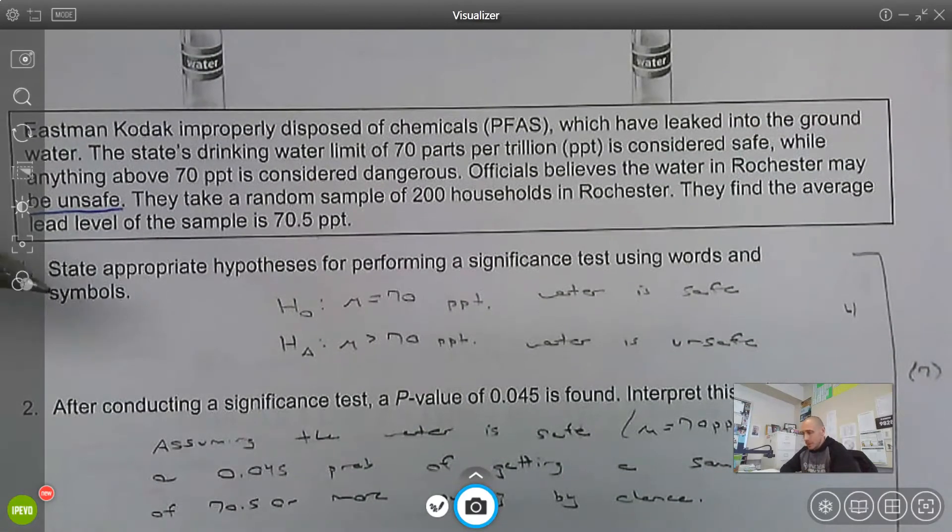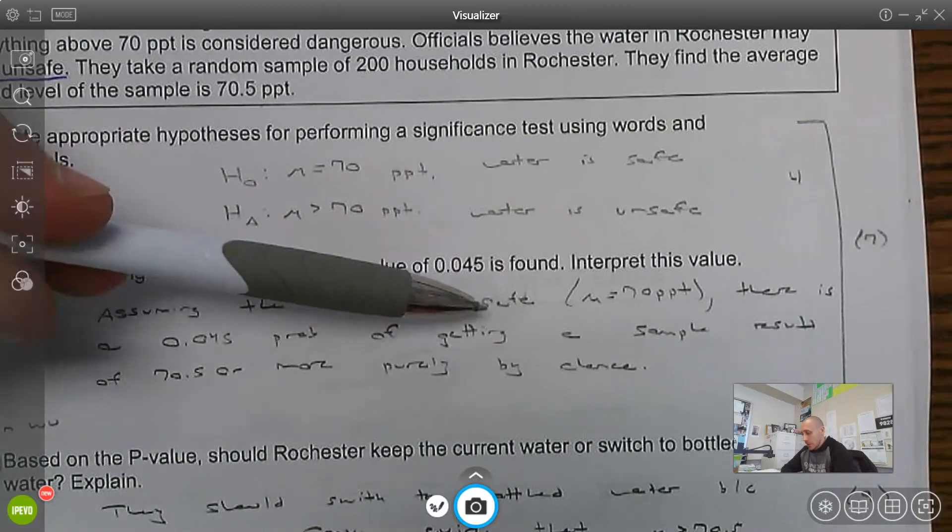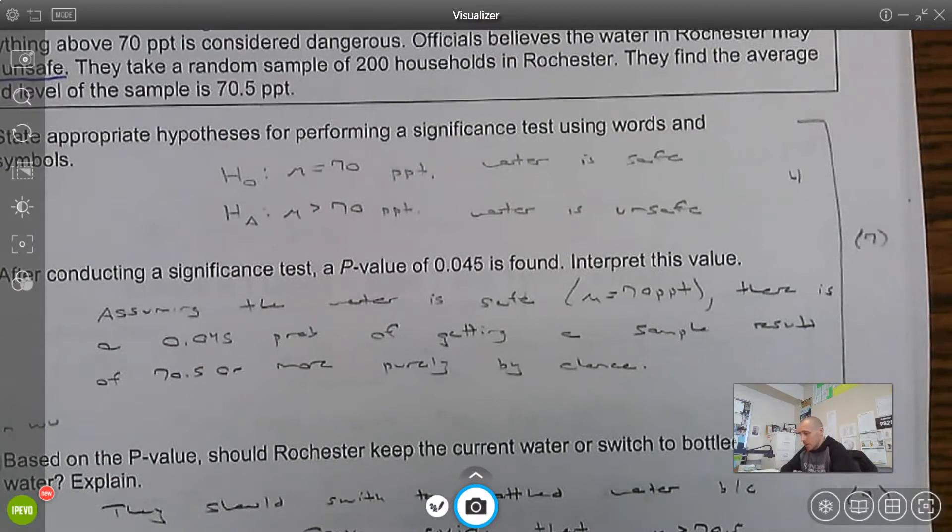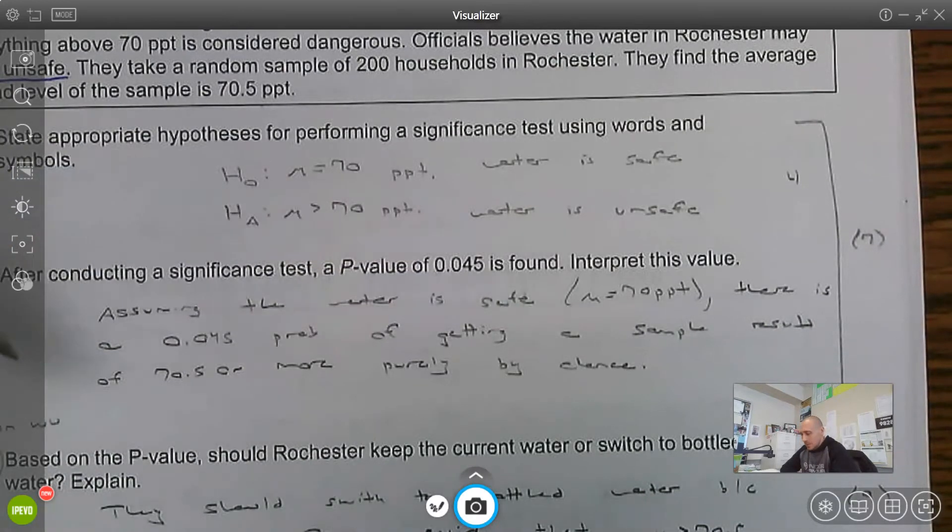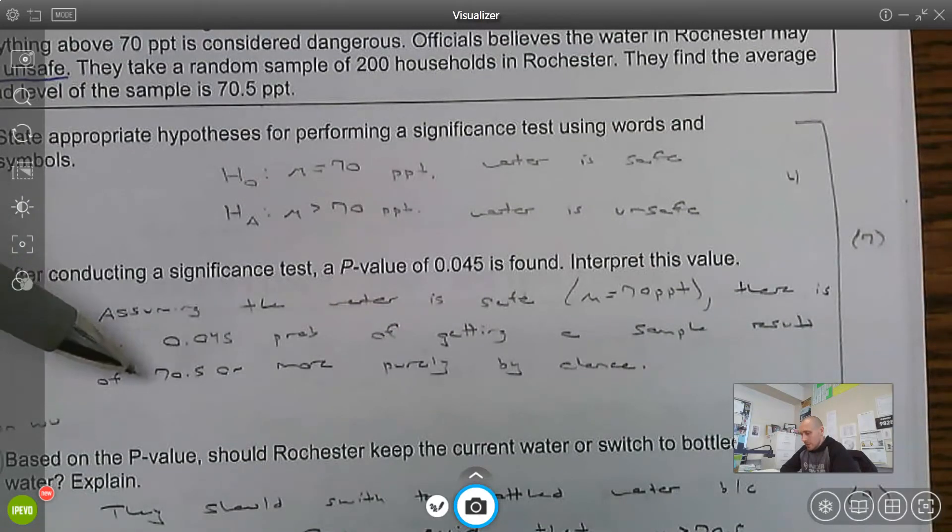Interpreting a p-value, been there, done that. This is the idea of assuming the water is safe, or assuming that mu is equal to 70 parts per trillion. There is a 0.045 probability of getting a sample result of 70.5, that was our sample mean, or more purely by chance. So kind of unlikely to happen by chance.